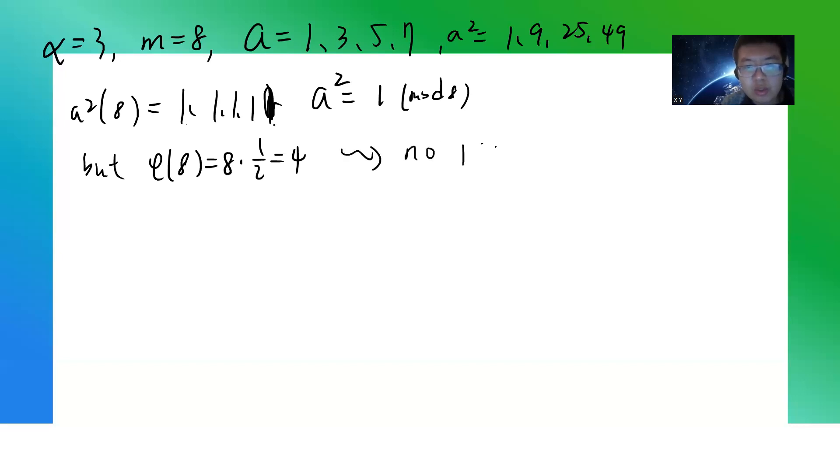No primitive roots, right, because you can only get a² ≡ 1, but not a to the first equals 1.